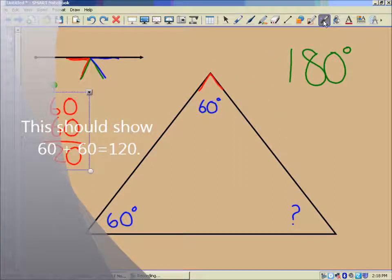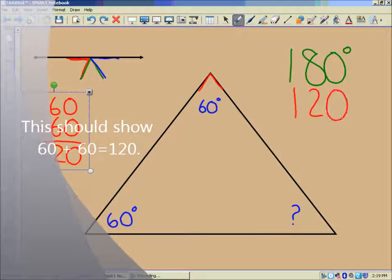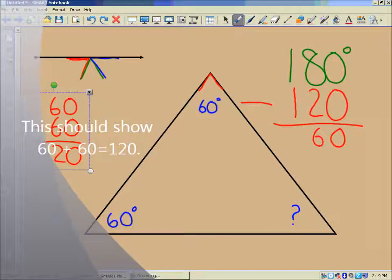So if I took 120 and I subtracted that from 180, we get 0 minus 0 is 0, 8 minus 2 is 6, 1 minus 1 is 0. So we'd be left with a 60 degree angle. So that missing angle would be 60 degrees. So there's the missing angle on that case.